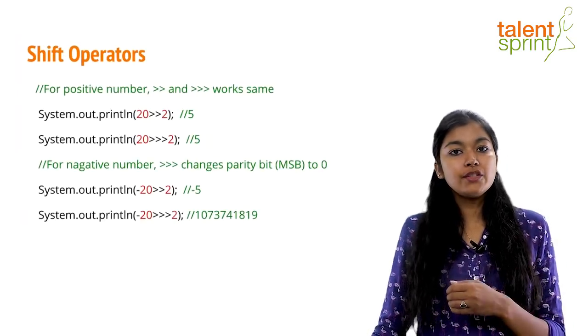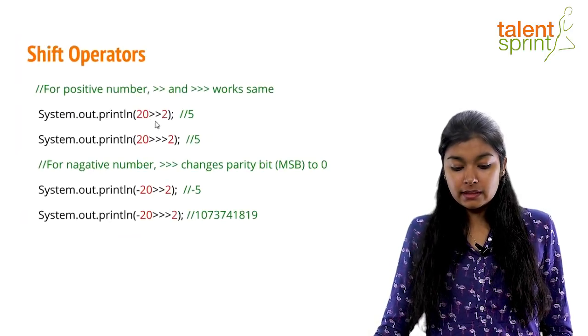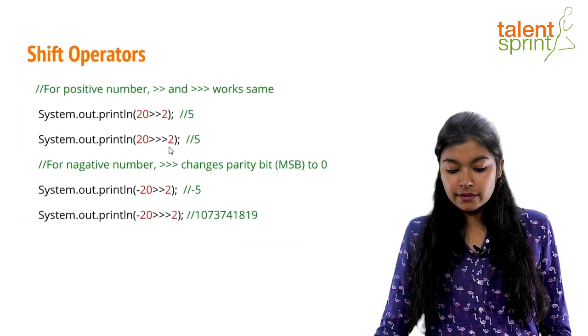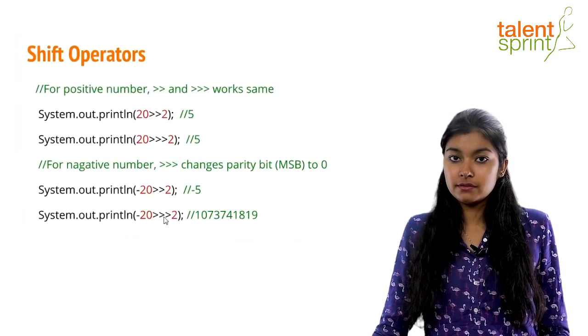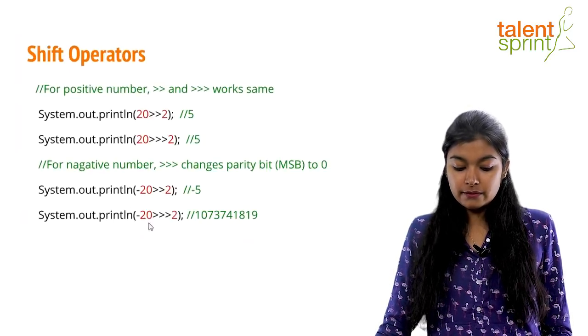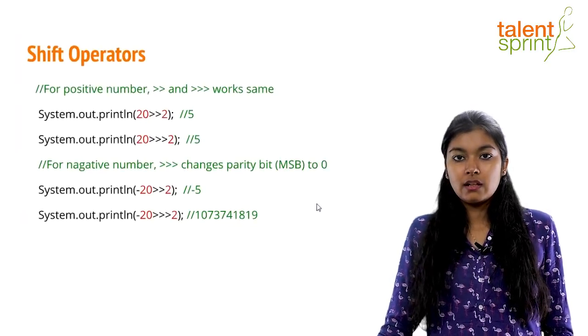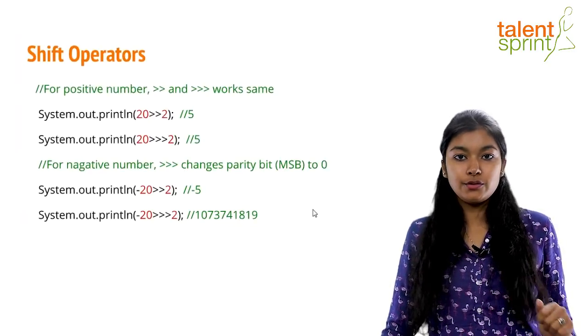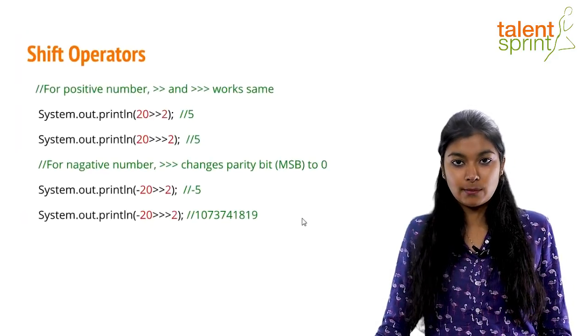Now there is a difference between right shift and zero fill right shift. So if you do 20 right shift 2 or 20 zero fill right shift 2, you get the same output. But for negative numbers, when you do right shift 2 and when you do zero fill right shift 2, your output changes. Now this is very interesting that I want you to take a look and check why this difference is coming.